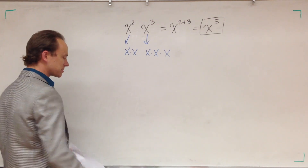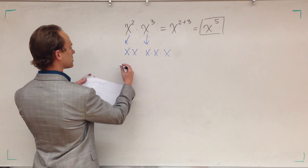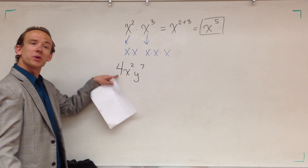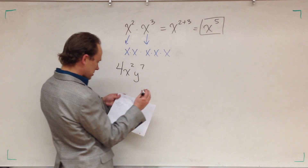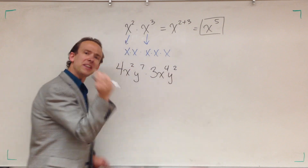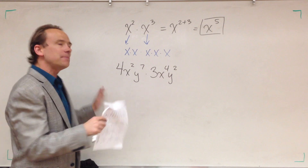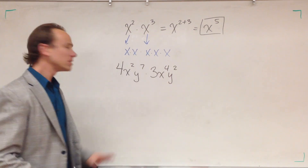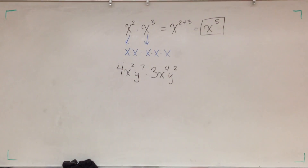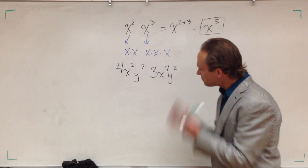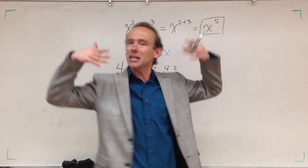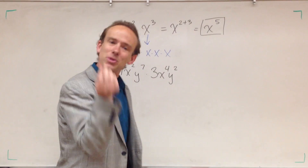Now let's do a little more of this. We will have 4x squared y to the seventh, times 3x to the fourth y squared. Now I'm hitting you with an integer in front of the variable and two variables, but that's all good. Once you fundamentally understand this, it doesn't matter how many variables I give you — I could have x, y, z, t, r, s. It would just be a longer problem, but not necessarily a more difficult problem. As long as you're only focused on the step you're on, however many variables there are simply makes it longer — it doesn't make any of the individual steps more difficult.